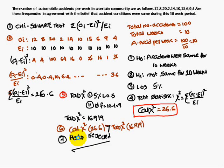The calculated chi-square value is 26.6, which is greater than the tabulated chi-square value of 16.919. Therefore, H₀ is rejected. Thank you.